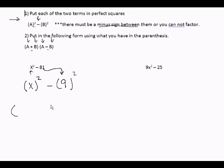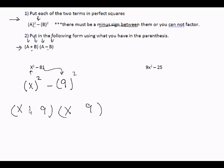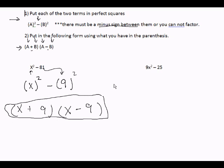Now you put two big parentheses. Whatever was in the first parentheses — x — goes into the first spot of each. Whatever's in the second parentheses — nine — goes into the second spot of each. You're always going to have one plus and one minus, and it does not matter which order you place the plus or minus. And there's my answer for factoring two terms.